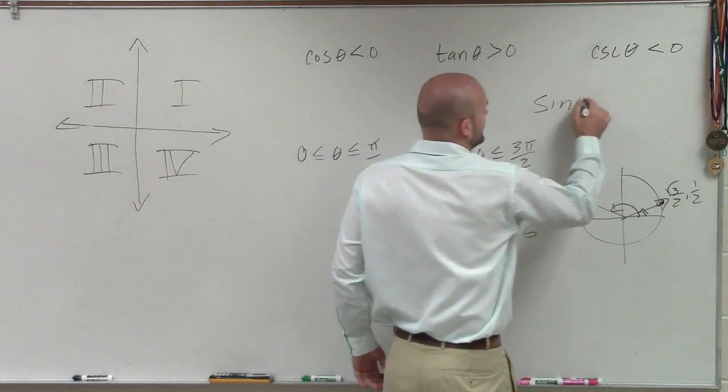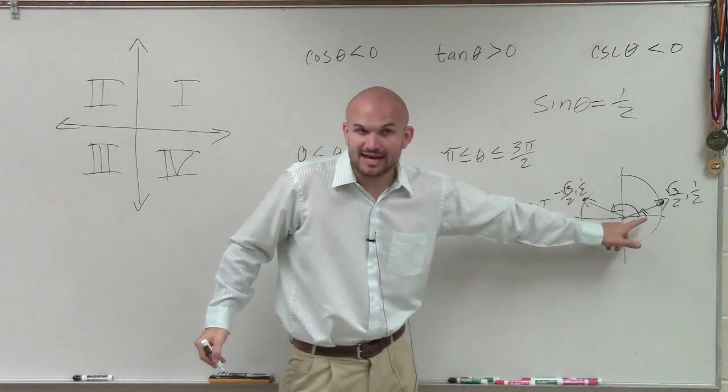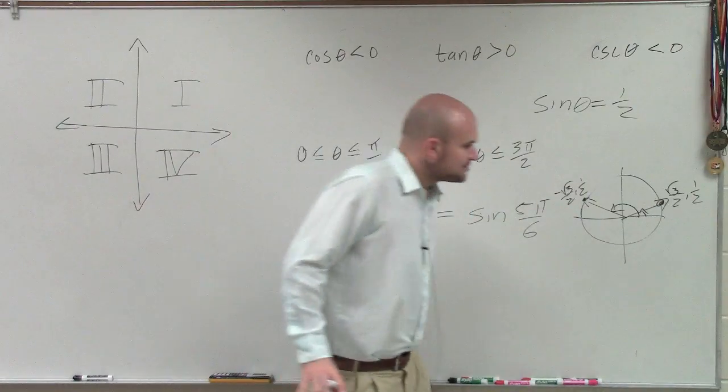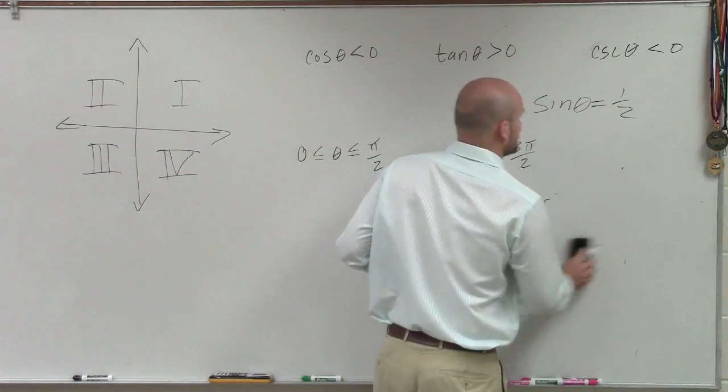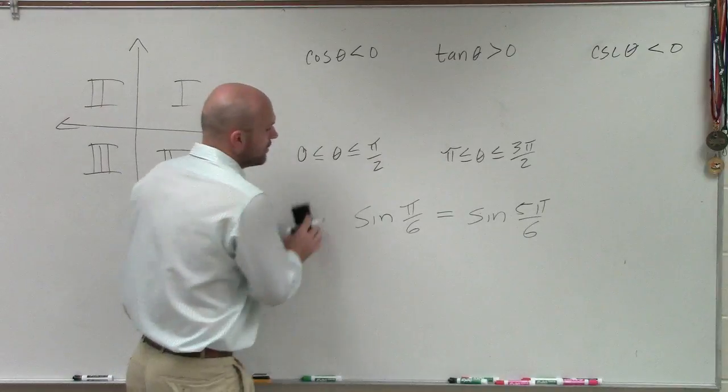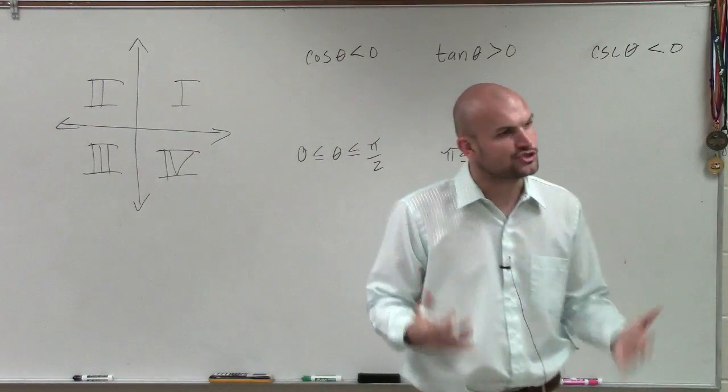and I say sine of theta when it equals 1 half, there's two answers: pi over 6 and 5pi over 6. So unless I tell you there's a constraint, you need to provide both answers. And that can become very time consuming. So a lot of times, ladies and gentlemen,